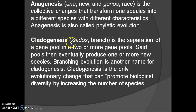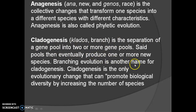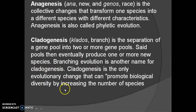In cladogenesis, 'clados' means branching. It is a separation of a gene pool into two or more gene pools that eventually produce one or more new species. Branching evolution is another name for cladogenesis. You have to remember this key point.